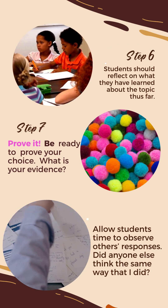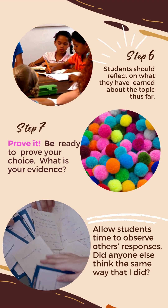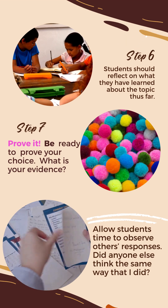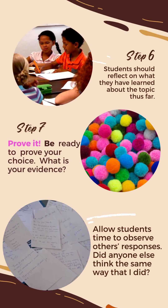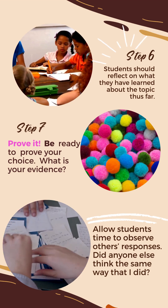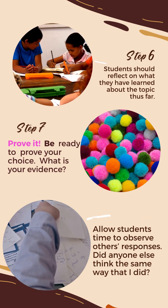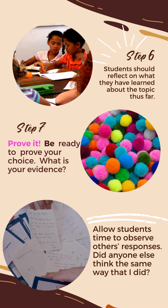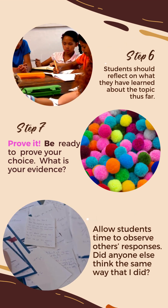Then you're going to allow students at the very end of the activity to go around and view what their classmates and peers have selected. This gives them a chance to see what other people are thinking — how many people thought the same way they did, how many people did not, and whether they're surprised by their findings. If you have additional time, you can also allow students to talk with their peers and find out specifically why someone selected what they did.